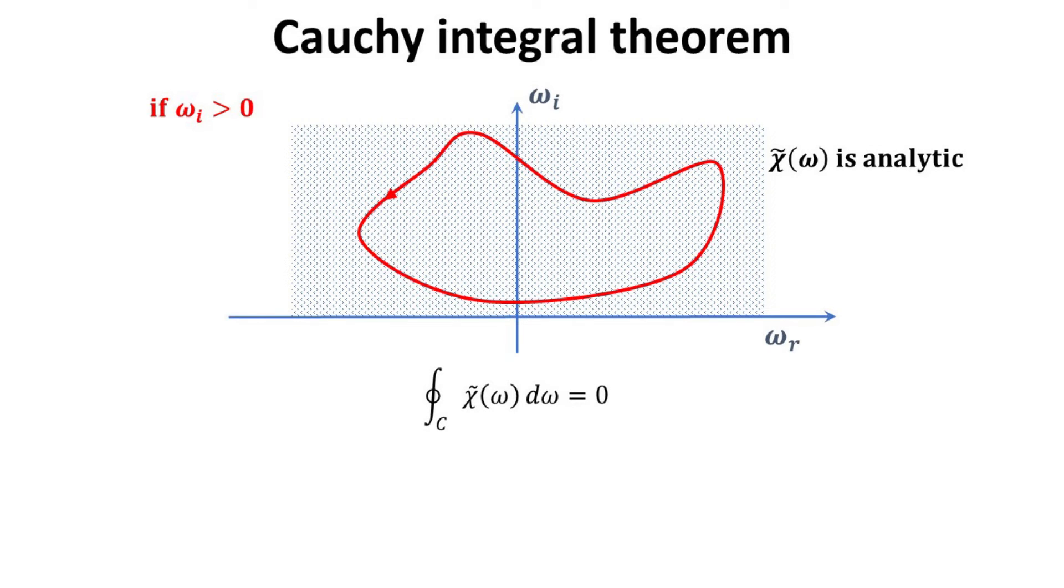The Cauchy integral theorem would then require that any simply closed contour integral of chi tilde over the upper half plane will be zero.